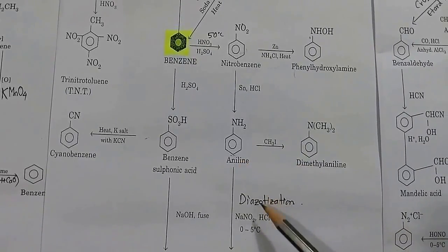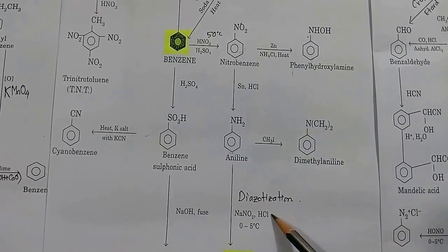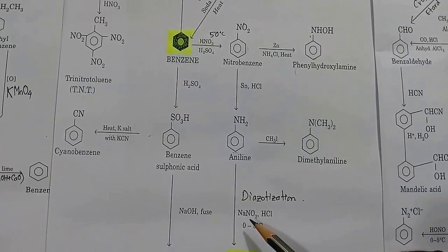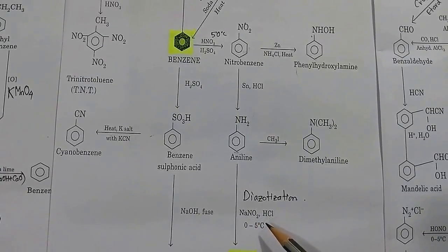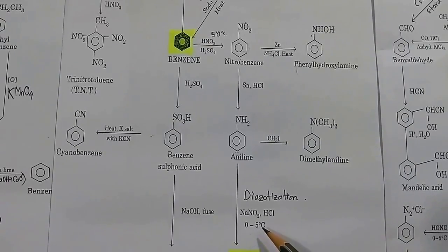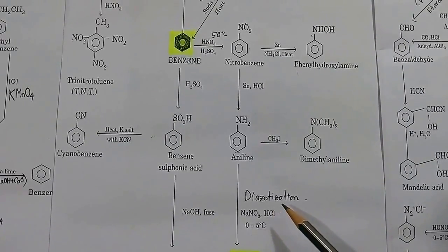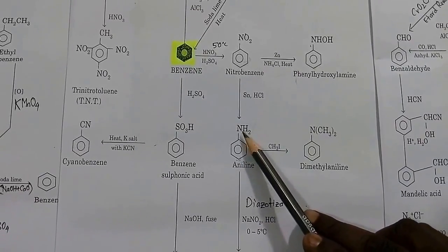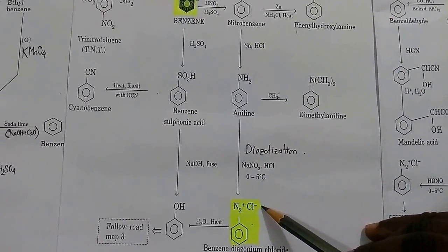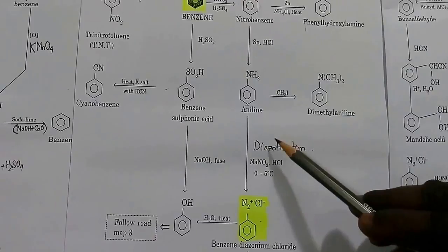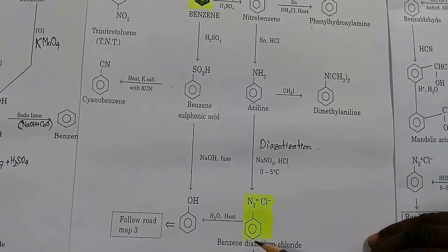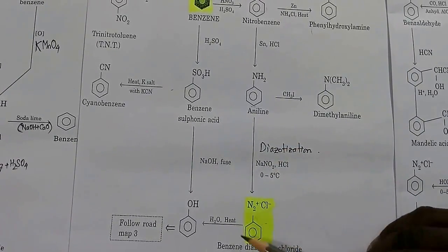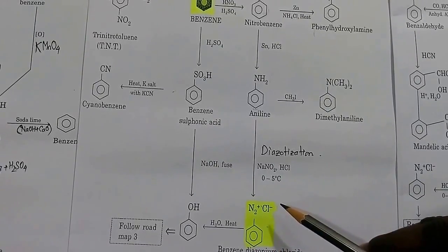From aniline, applying NaNO2 and HCl — the main reagent is HNO2 (nitrous acid) — and maintaining the temperature from 0 to 5 degrees, it is called the diazotization reaction. The NH2 group changes to N2+Cl−, so the product is benzene diazonium chloride, one of the most important organic compounds.